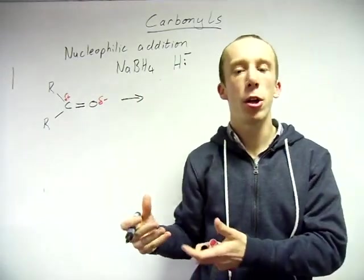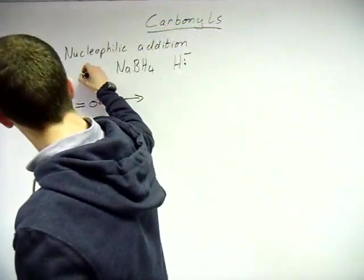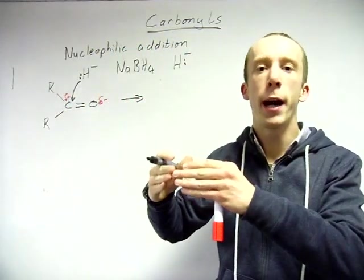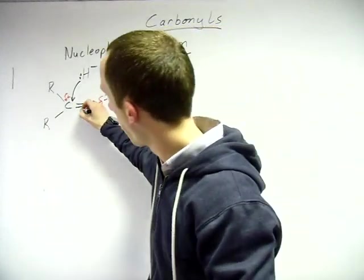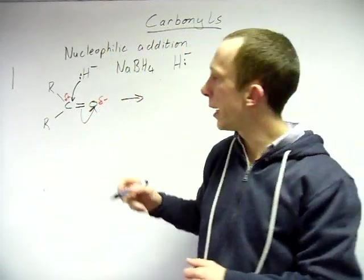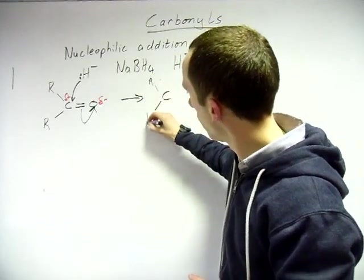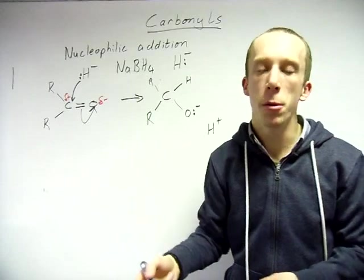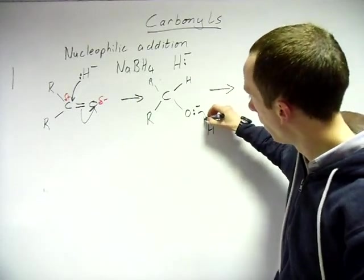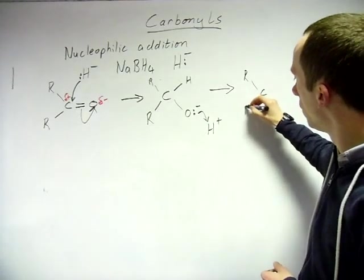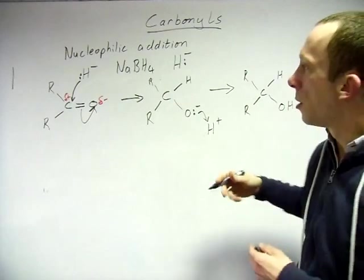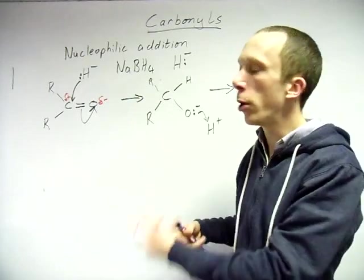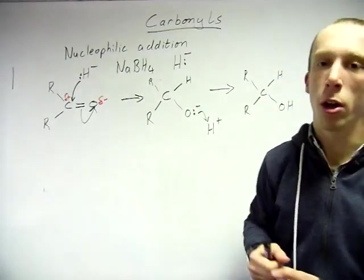NaBH₄ releases H⁻ ions. The mechanism occurs in exactly the same way as before — show your lone pair, use a double-headed arrow for movement of two electrons, and it attacks the carbon. The pi bond breaks. Then hydrogen ions from solution are grabbed. This reduces your aldehyde or ketone back to the alcohol: a primary alcohol for the aldehyde, or a secondary alcohol for the ketone.